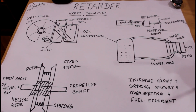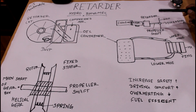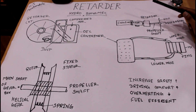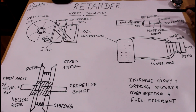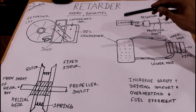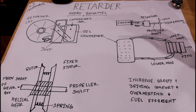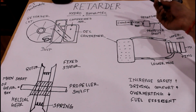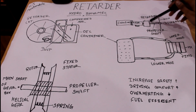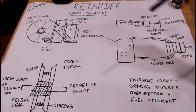The retarder is used manually. In the driver compartment there is a lever which is actuated by the driver as per requirement. That lever sends the message to the ECU — the electronic control unit — and the electronic control unit controls the whole setup of the retarder.